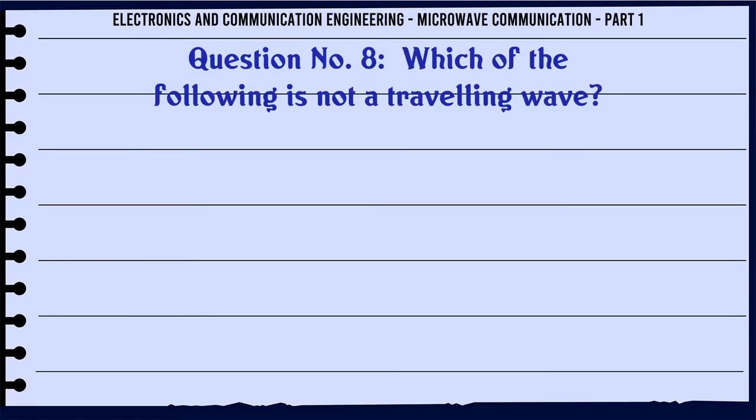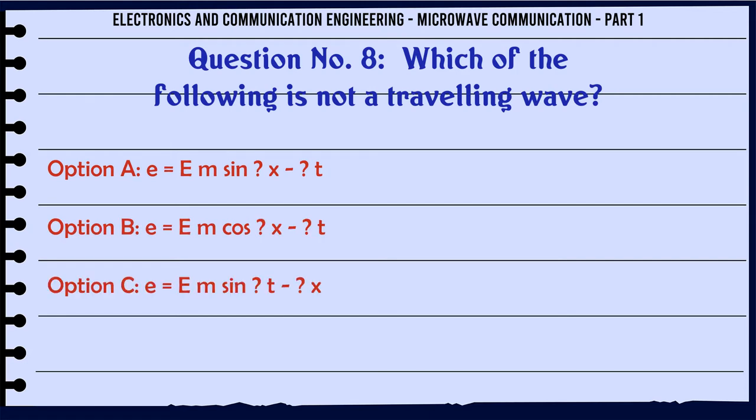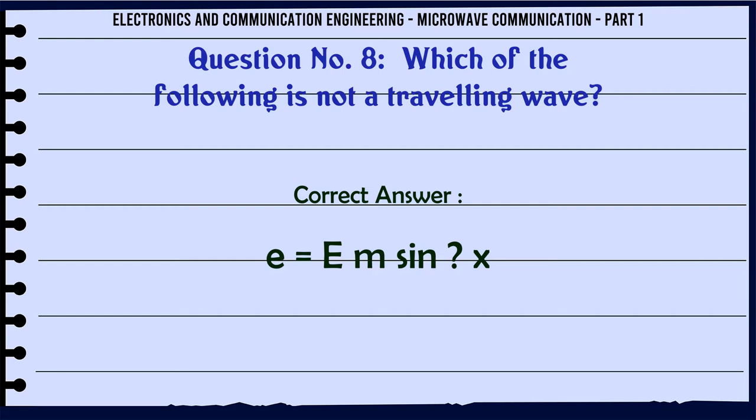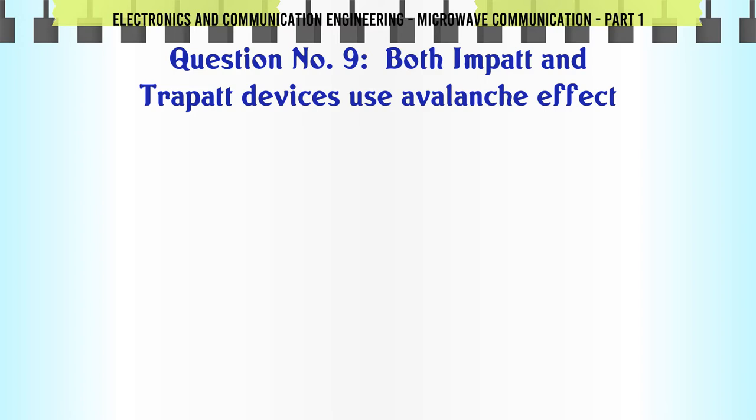Which of the following is not a traveling wave? A. E = E M sin x t, B. E = E M cos x t, C. E = E M sin t x, D. E = E M sin x. The correct answer is E = E M sin x.